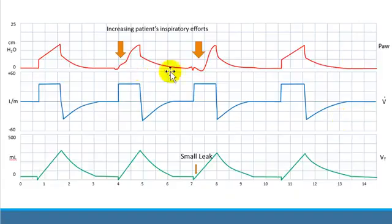You can see how the second breath is scooped down and this is increasing on the third breath. There is increasing patient's inspiratory effort, and this indicates that the set inspiratory flow on the machine is inadequate and should be increased.